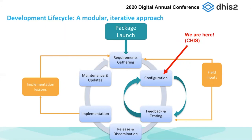For us to be able to release, we have to make sure we have all necessary documentation. Once we release and publish, users can go ahead and do the implementation — we can support that process by working with countries and end users to install the package. After implementation, you need maintenance and updates to stay current with the core DHIS2 software and any new changes within the package. On the left side, lessons learned — which we can only get through implementation — feed back into requirements, along with inputs from the field during configuration, helping us have a product with solid field-based requirements.